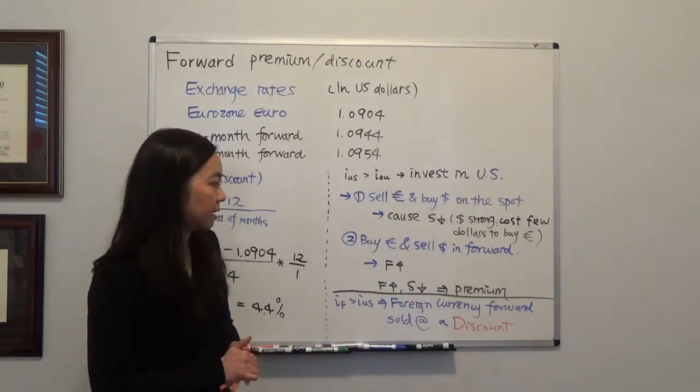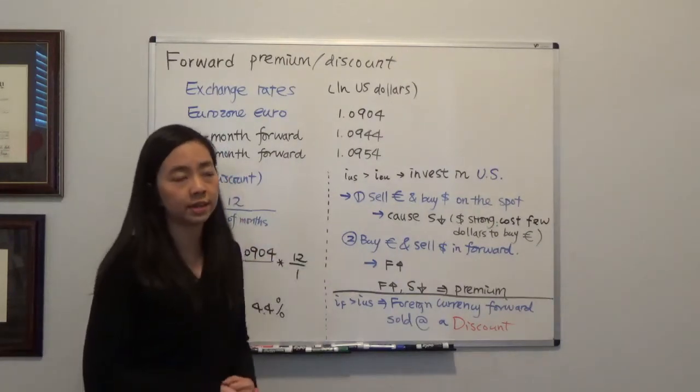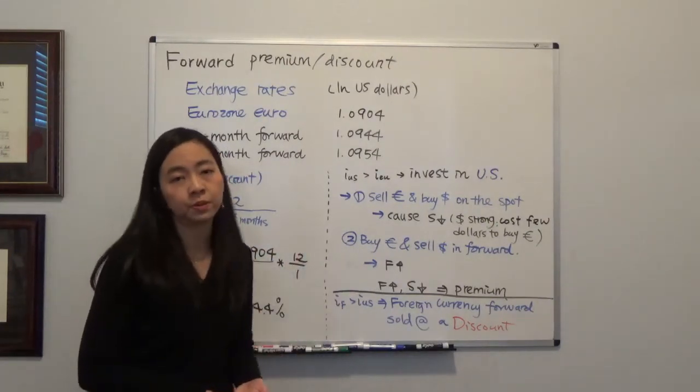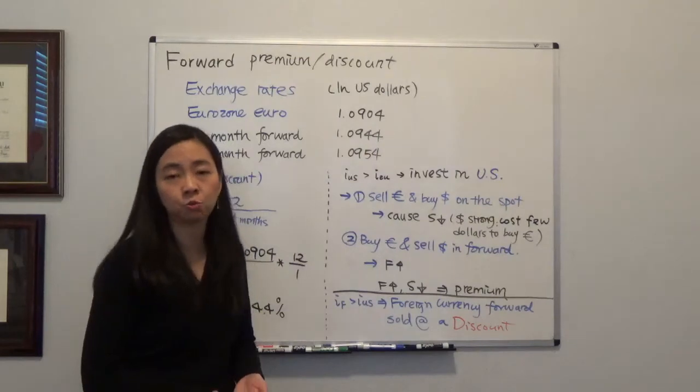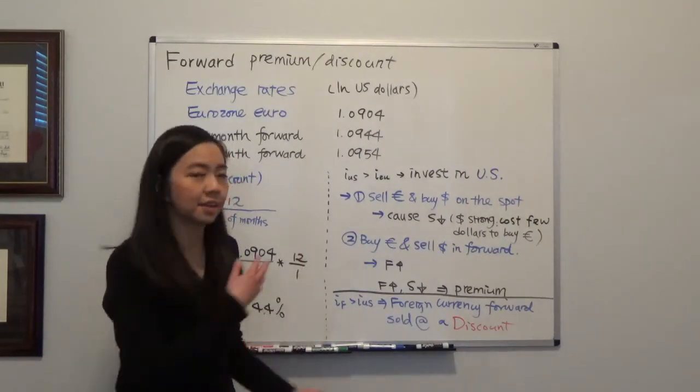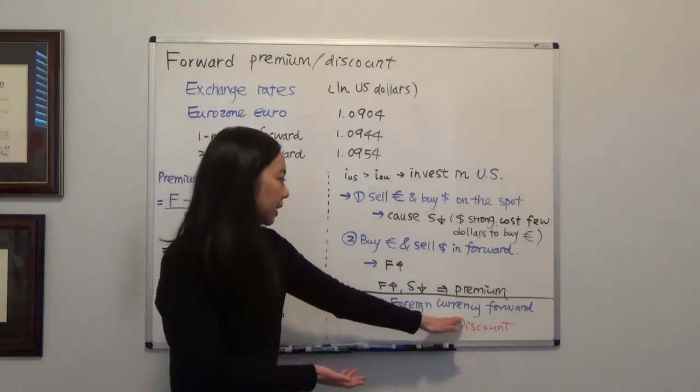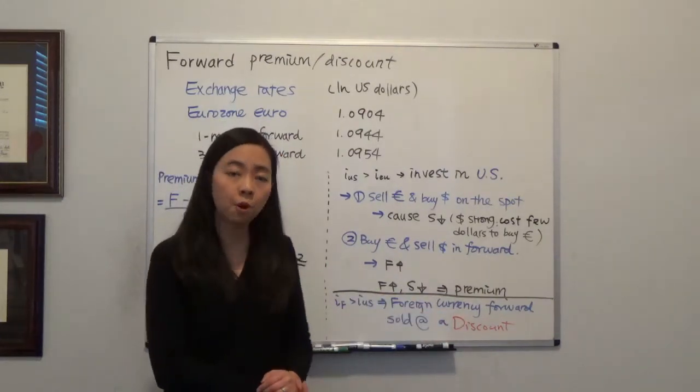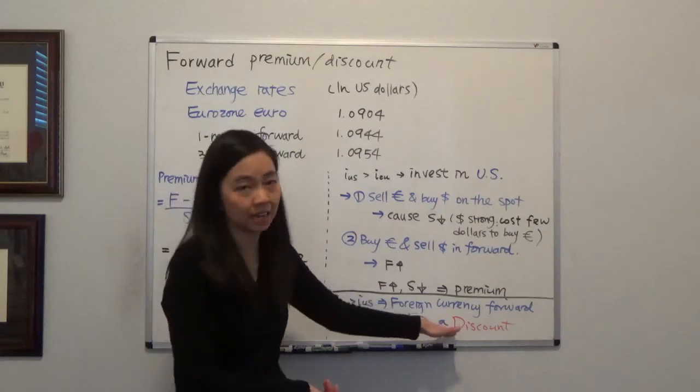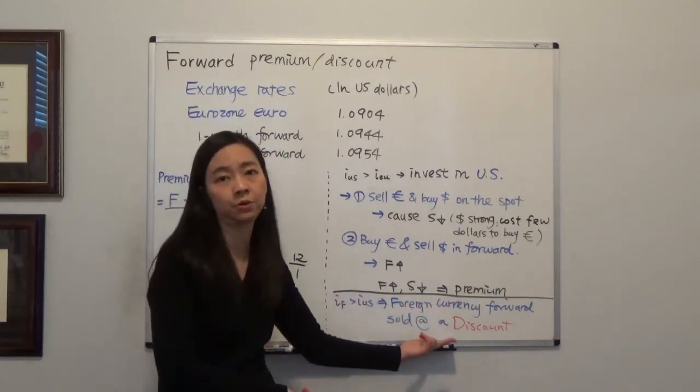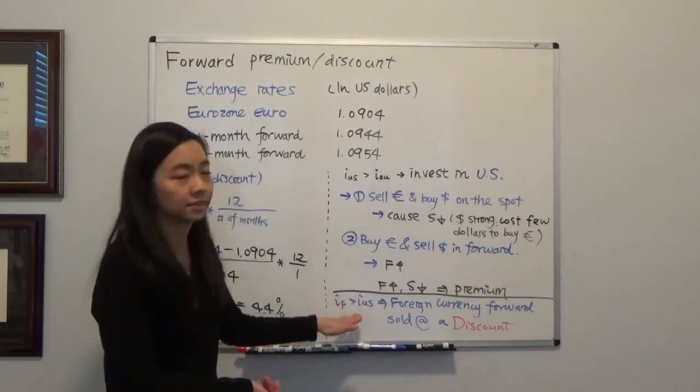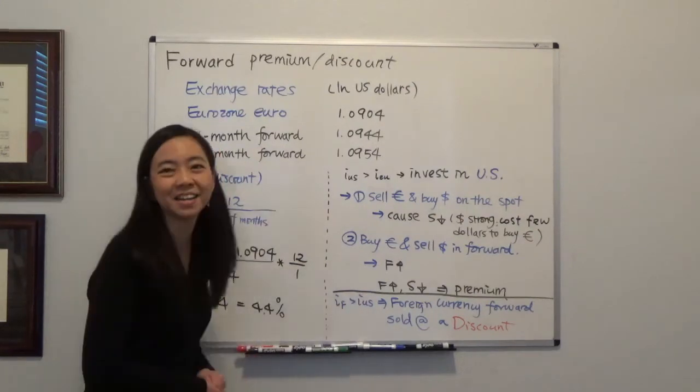So I want to leave the rest as homework. Think about this: in a different scenario where the short run interest rate in Europe is higher than the short run interest rate in the States, the opposite will happen. You will find the foreign currency forward, the euro's forward, is going to be sold at discount in the other scenario. I hope this helps and I'll see you next time.